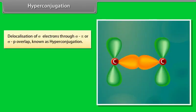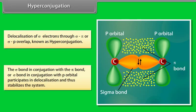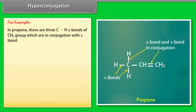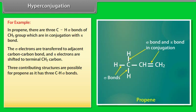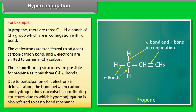Hyperconjugation: delocalization of sigma electrons through sigma-pi or sigma-p overlap is known as hyperconjugation. In propene, three C-H sigma bonds of the CH3 group are in conjugation with the pi-bond. The sigma electrons are transferred to the adjacent C-C bond and pi-electrons shift to the terminal CH2 carbon. Three contributing structures are possible. Because sigma electrons participate in delocalization, hyperconjugation is also referred to as no-bond resonance.